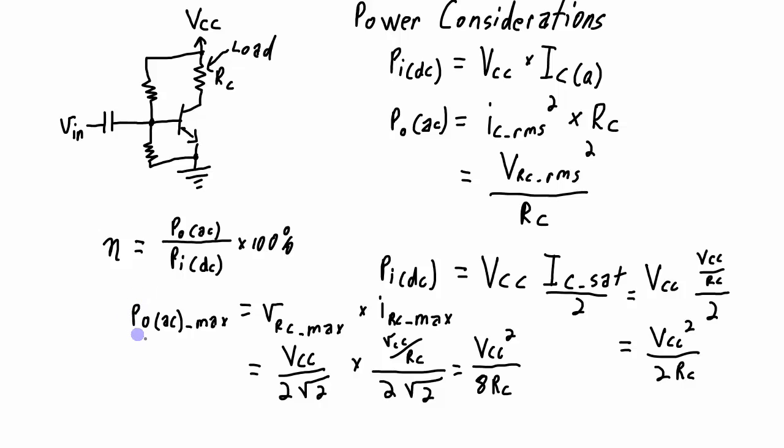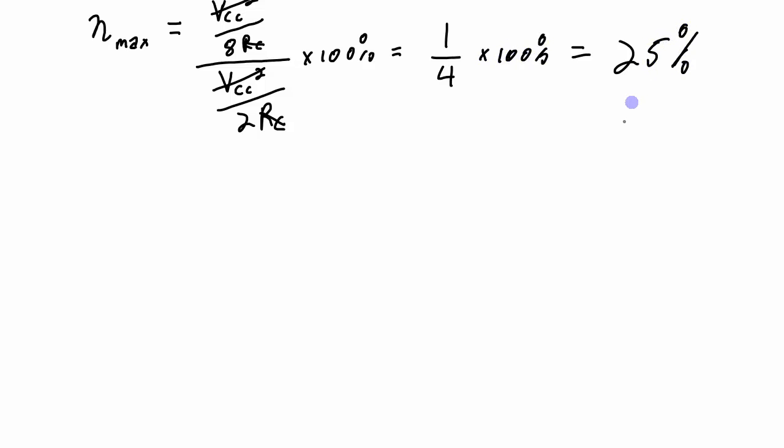Now I'm going to put the maximum output power and the maximum input power together to determine the maximum efficiency. So there's my input power. There's my expression for the output power. I can see a lot of these terms are going to cancel. VCC squared cancel. RC cancels. Multiply that by 100%. And what I'm going to end up with is 1 over 4 times 100% or 25%. So this shows that the maximum efficiency that I can have in a class A BJT amplifier is 25% efficiency.